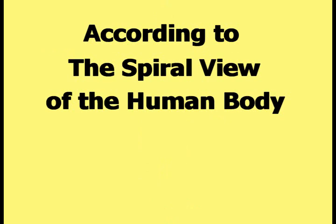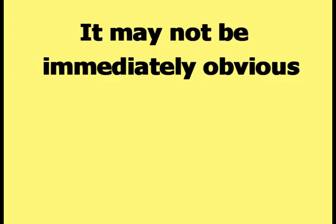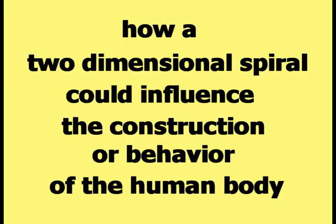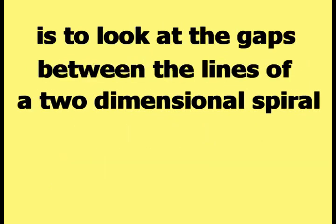According to the spiral view of the human body, two-dimensional spirals also influence the construction and behavior of the human body. This picture shows an example of a two-dimensional spiral. It may not be immediately obvious how a two-dimensional spiral could influence the body, but the key is to look at the gaps between the lines of a two-dimensional spiral.